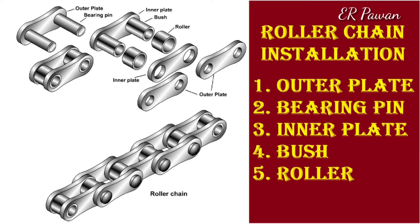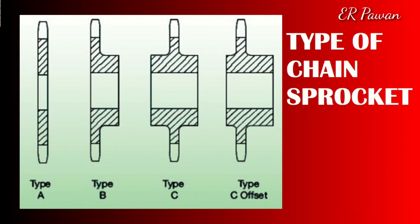A chain is made by a number of links connected by the help of a pin. Chains run over a wheel called a sprocket, which has several teeth around its circumference to grip the chain. In the slide you can see the types of sprockets and chains. However, not all chains need a sprocket to run over, and we will further see the different types of chain and where they are used.